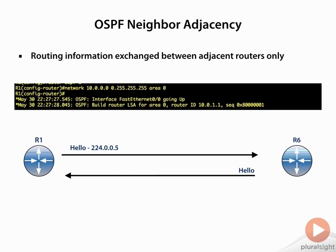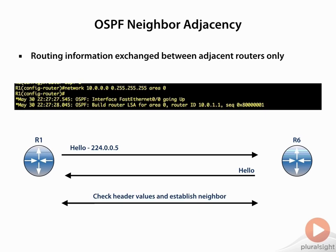It heard hellos from our other router on the other side, and it checked the header values to make sure that certain fields matched, like the timers and the authentication, and it established a neighbor.